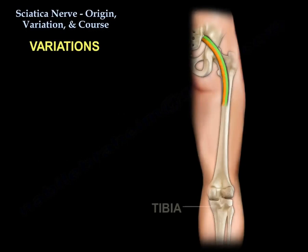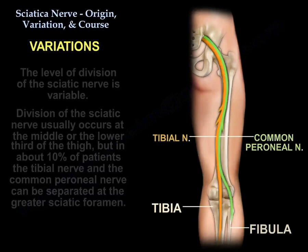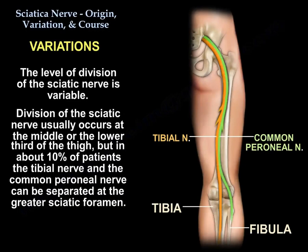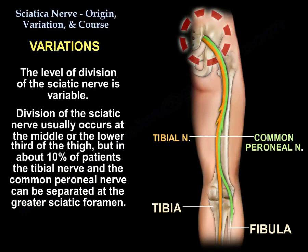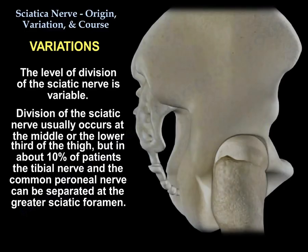The level of division of the sciatic nerve is variable. It usually occurs at the middle or lower third of the thigh, but in about 10% of patients the tibial nerve and the common peroneal nerve can be separated at the level of the greater sciatic foramen.